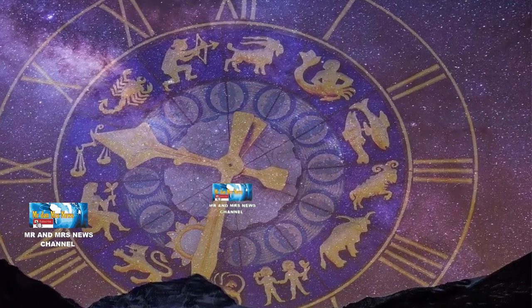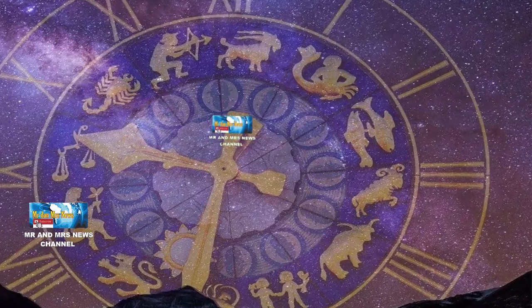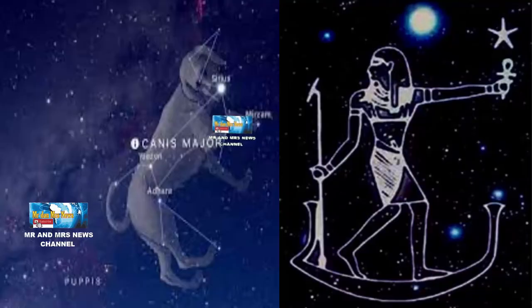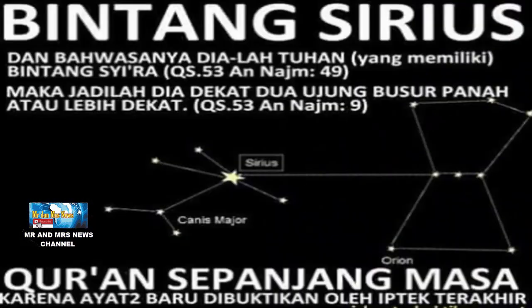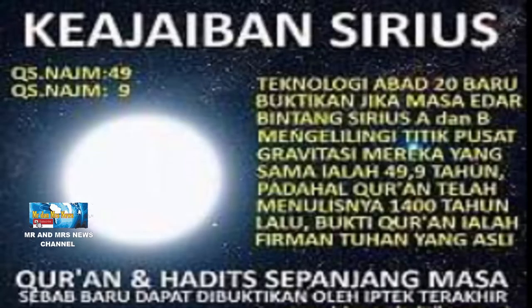Sirius merupakan salah satu bintang paling penting bagi peradaban masyarakat kuno dan Mesir Arab karena digunakan untuk menandai banjir tahunan di sungai Nil. Bintang ini bahkan diabadikan dalam naskah kuno sebagai Asisira yang kemudian diserap ke dalam bahasa Latin sebagai nama alternatif dari Sirius.